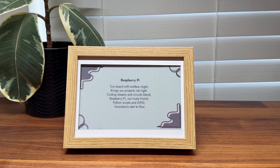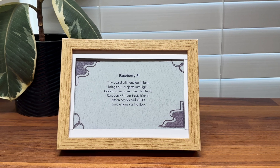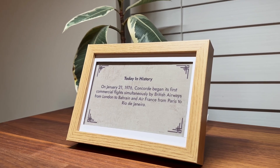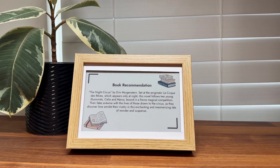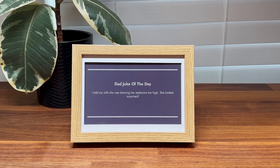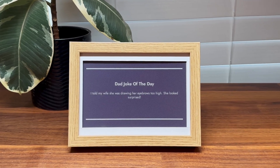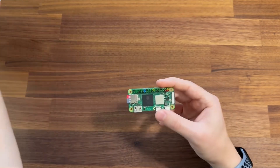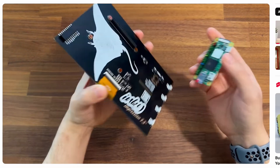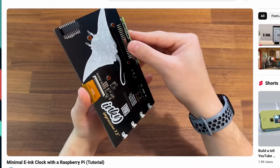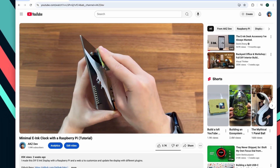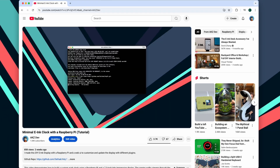Later in the video, I'll also be building an AI text plugin to display dynamic text content like random daily quotes, historical events, book or movie recommendations, fun facts, or anything else that ChatGPT can output. This project uses a 7.3-inch e-ink display powered by a Raspberry Pi. You can check out my previous video for a full tutorial on the hardware and software setup.